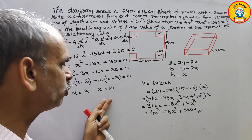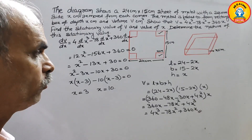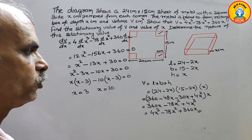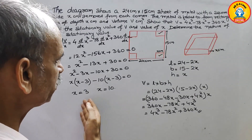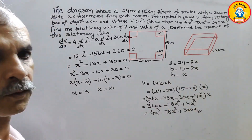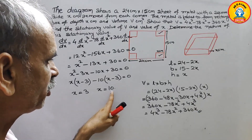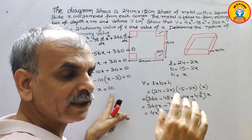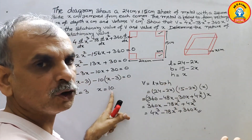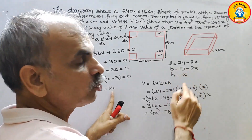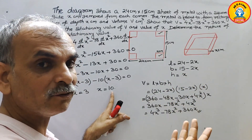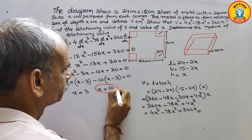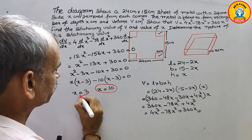We got two values of x and need to check whether both are valid. Substituting x = 10: length = 24 minus 20 = 4, which is positive. But breadth = 15 minus 20 = minus 5, which is negative — not physically possible. So we eliminate x = 10. Therefore, the valid value is x = 3.